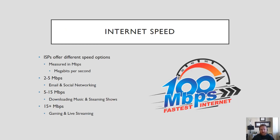The next thing is your internet speed. Typically, internet speed is measured in Mbps, which is megabits per second, and it's broken down into two categories: download and upload. Download is typically the higher number, and that's the amount of speed that you can download at a time. That's really important for things like playing online games, streaming from Netflix and Hulu and things like that, and also just downloading music and files.